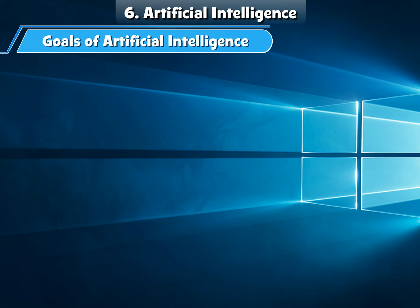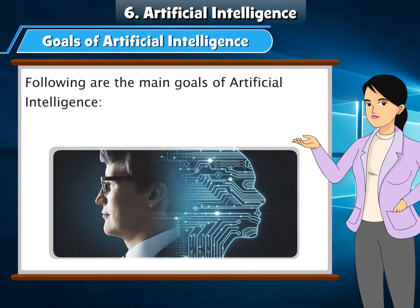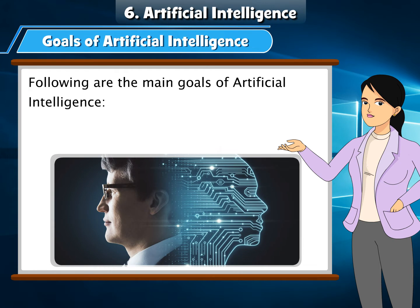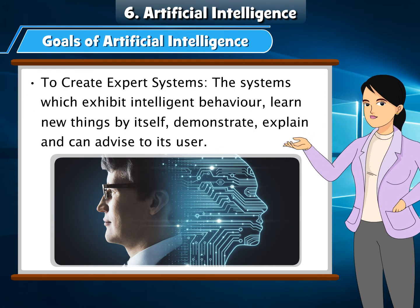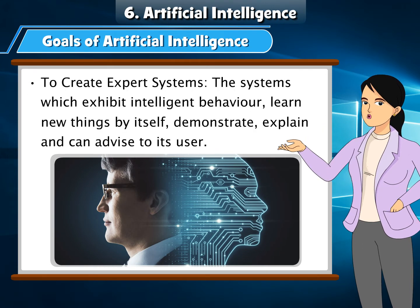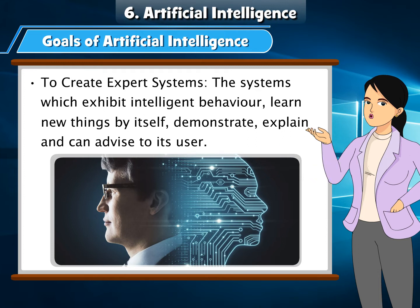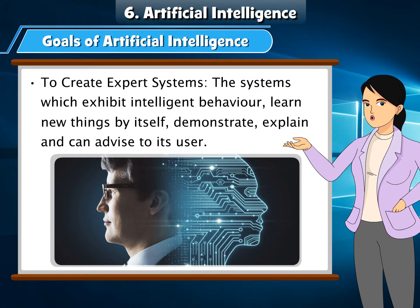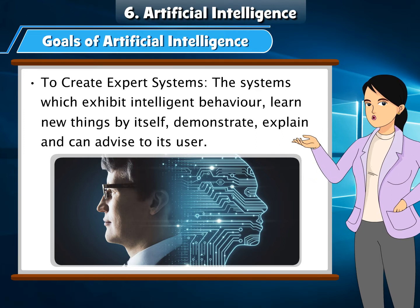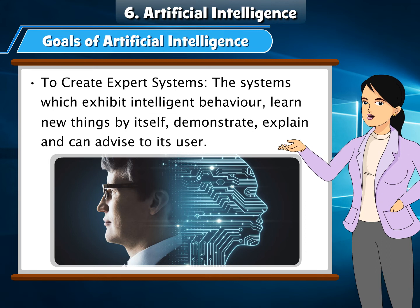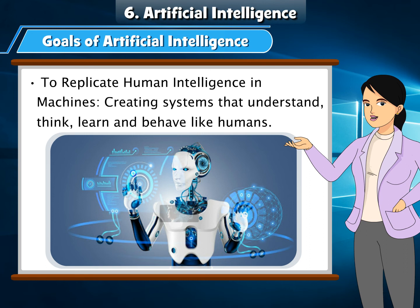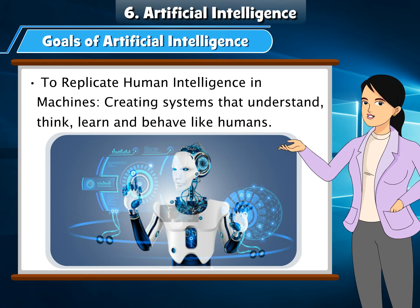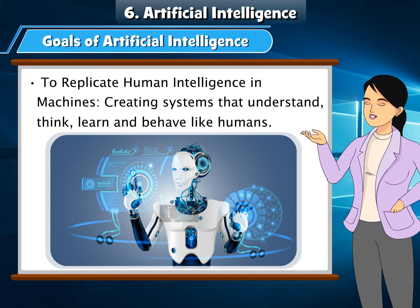Goals of Artificial Intelligence: The main goals are — first, to create expert systems: systems which exhibit intelligent behavior, learn new things by themselves, demonstrate, explain, and can advise their users. Second, to replicate human intelligence in machines: creating systems that understand, think, learn, and behave like humans.